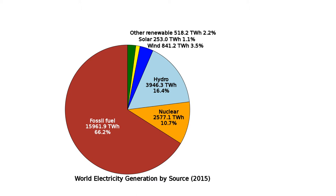Nuclear power is the use of nuclear reactions that release nuclear energy to generate heat, which most frequently is then used in steam turbines to produce electricity in a nuclear power plant. Nuclear power can be obtained from nuclear fission, nuclear decay, and nuclear fusion reactions. Presently, the vast majority of electricity from nuclear power is produced by nuclear fission of uranium and plutonium. Civilian nuclear power supplied 2,563 terawatt hours of electricity in 2018, equivalent to about 10% of global electricity generation, and was the second largest low-carbon power source after hydroelectricity.